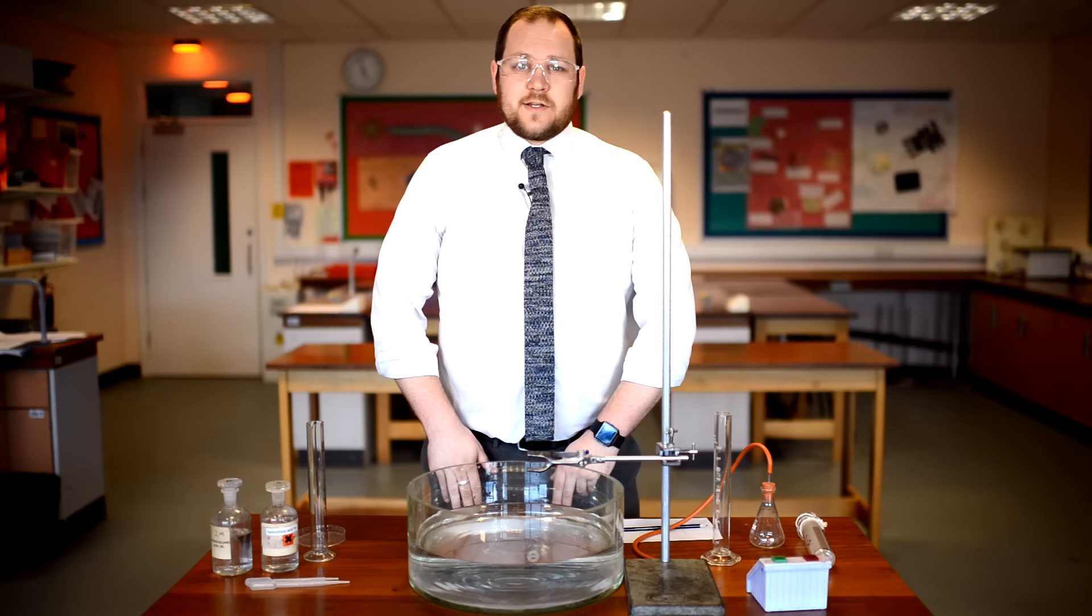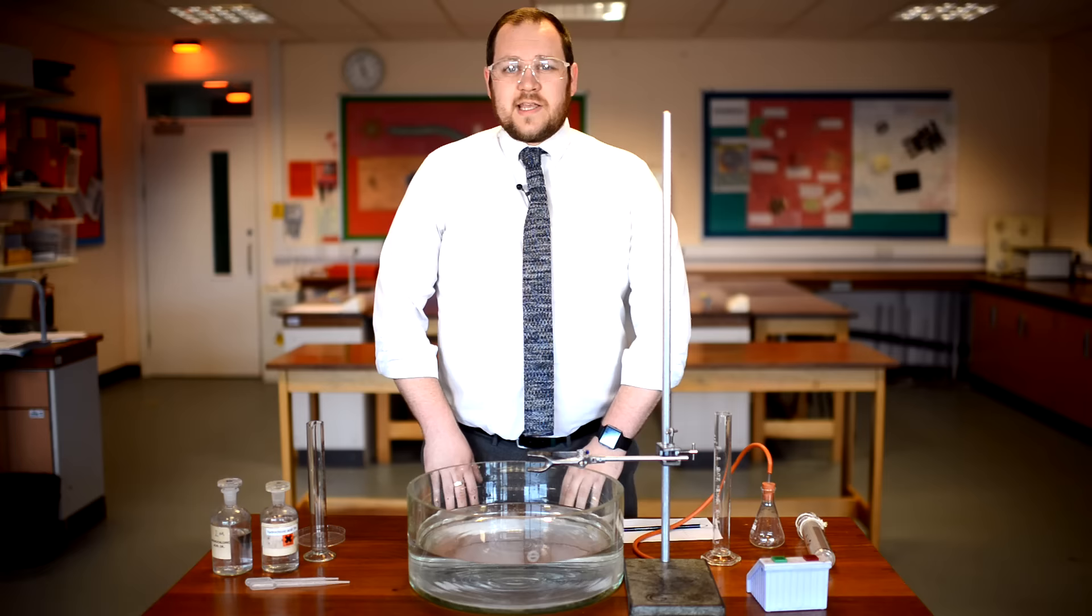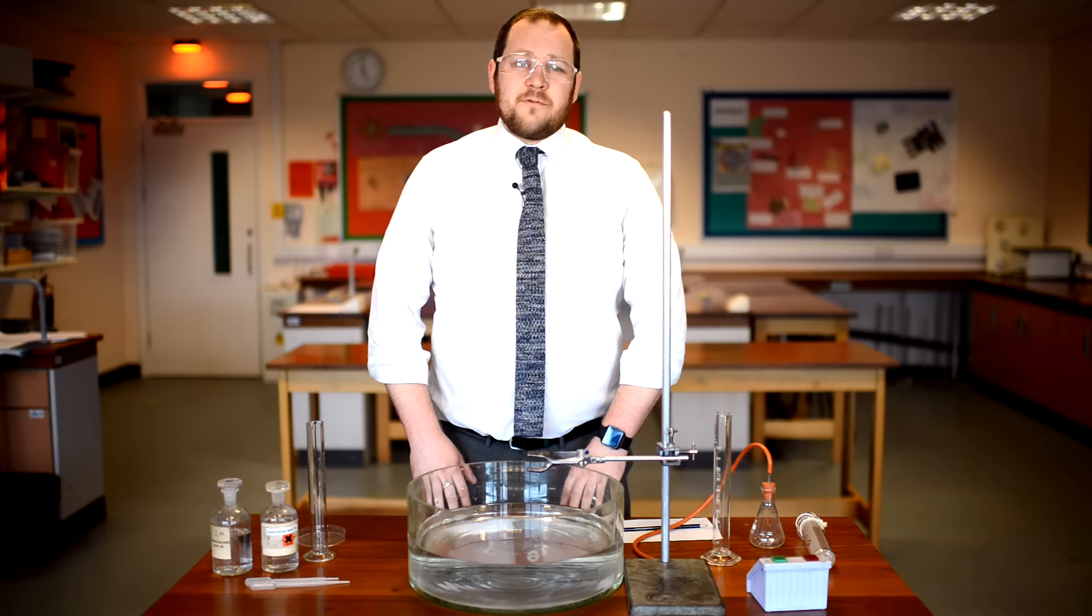I'm going to show you two methods to measure the rate of a chemical reaction today. Firstly, using a measuring cylinder and secondly, a gas syringe. For the reaction today, I'm going to be using magnesium and hydrochloric acid. I'm going to be comparing two different concentrations of hydrochloric acid.